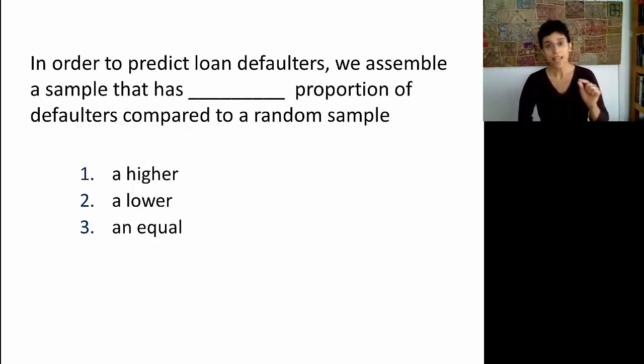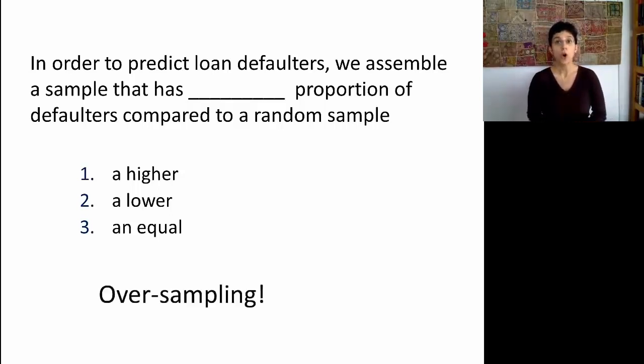The answer is that in applications such as loans or fraud detection, we often have a very small proportion of defaulters or fraudulent claims. In that case, if we take a random sample, we're likely to see a very small number of instances. By not having a sufficient number of defaulters, the algorithm is going to have trouble learning the difference between the defaulters and the non-defaulters. That's why a typical practice is to actually take a sample where we have a higher proportion of this unique or rare class. This is called oversampling.